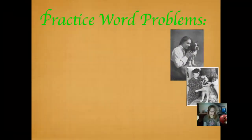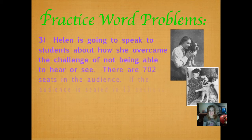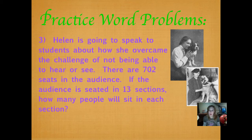Here's our practice word problems and some photos of Helen with her dogs. Helen is going to speak to students about how she overcame the challenge of not being able to hear or see. There are 702 seats in the audience. If the audience is seated in 13 sections, how many people will sit in each section? Go ahead and figure out what you need to put in your division problem, and then work the problem, check it with multiplication, and push play when you're ready.